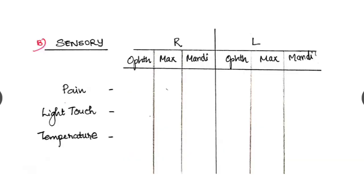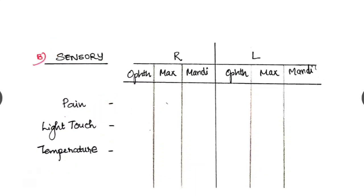The sensory part, the pain, light touch and temperature we have to check. In the right and the left side, check at the ophthalmic, maxillary and the mandibular areas of the trigeminal division separately and tabulate it.